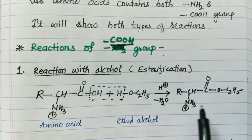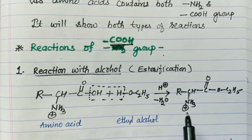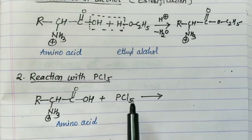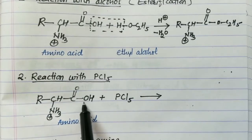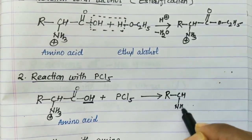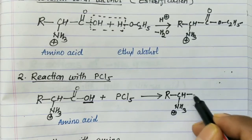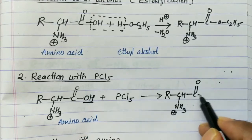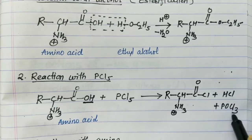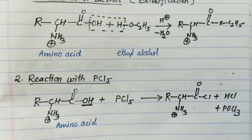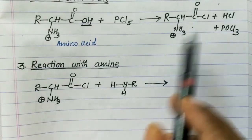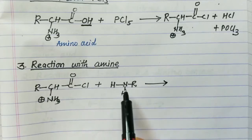We get the ester of the corresponding amino acid. Next reaction is the reaction with phosphorus pentachloride (PCl5). Taking the amino acid and PCl5, the role of PCl5 is to convert the OH group into Cl, giving the corresponding acyl halide of the amino acid, with HCl and POCl3 as side products. The formed acyl halide then reacts with amines — there is elimination of HCl.